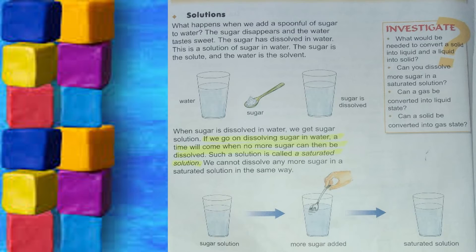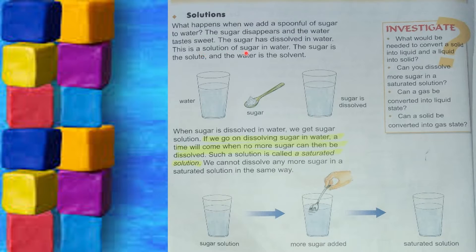Now, this is page 62 from your book — Solutions. What happens when we add a spoonful of sugar to water? The sugar disappears and the water tastes sweet — the sugar has dissolved in water. This is a solution of sugar in water. The sugar is the solute and the water is the solvent. Here you can see a glass of water; when we add sugar and mix it, it makes a solution.